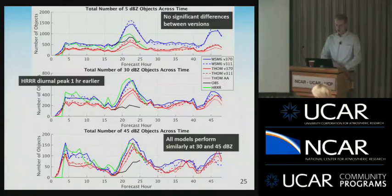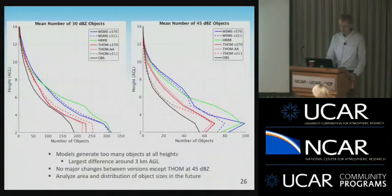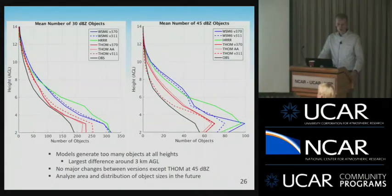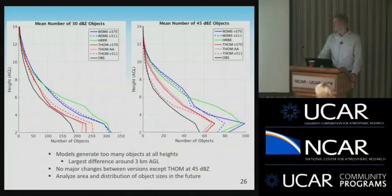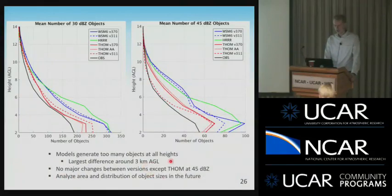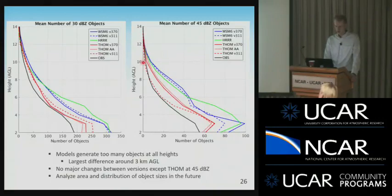Moving on to the number of objects through height — I'm not showing 5 dBZ because of noise, but 30 and 45 dBZ are pretty much noise-free from the radar data. The black line represents observations, red is Thompson, blue is WSM6. Analyzing both 30 dBZ on the left and 45 dBZ on the right, we still see that models generate too many objects at all heights — regardless of height. The largest difference is at 3 km AGL, which was a very pronounced bright-band area. There are no major changes between versions except Thompson at 45 dBZ, where the older version seems to line up better with observations.